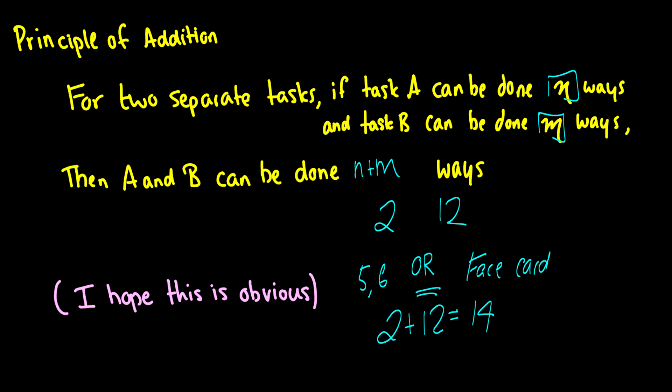So if I say 5 or 6 OR a face card, that's task 1, task 2, put them together, you get 2 plus 12, which is 14. There's 14 ways to roll a 5 or a 6 OR draw a face card.